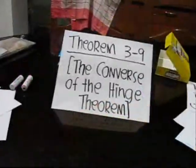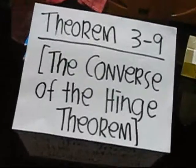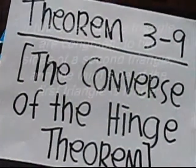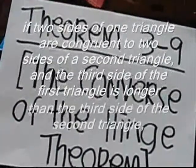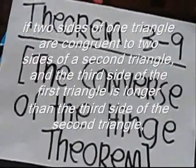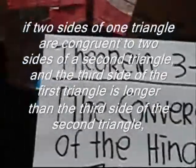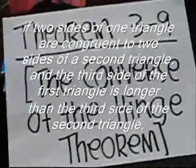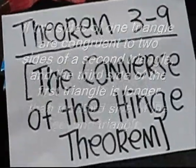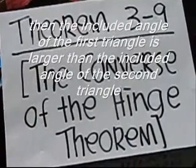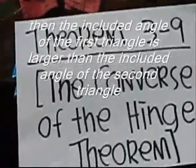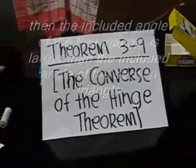For Theorem 3-9, the Converse of the Hinge Theorem: if two sides of one triangle are congruent to two sides of a second triangle, and the third side of the first triangle is longer than the third side of the second triangle, then the included angle of the first triangle is larger than the included angle of the second triangle.